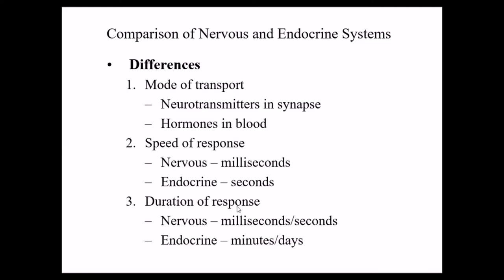The third difference is the duration of response. Because the nervous system is fast, the duration of its response is also much shorter — it doesn't last very long. That acetylcholine that goes into the synapse gets used up in milliseconds. The endocrine system's effects last much longer. Once a hormone gets released, it's in your system for minutes, hours, and even days.